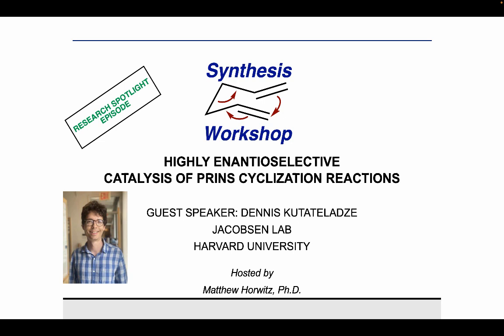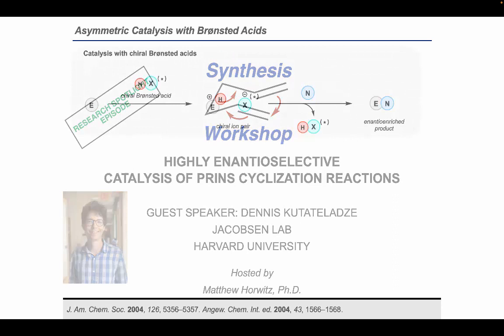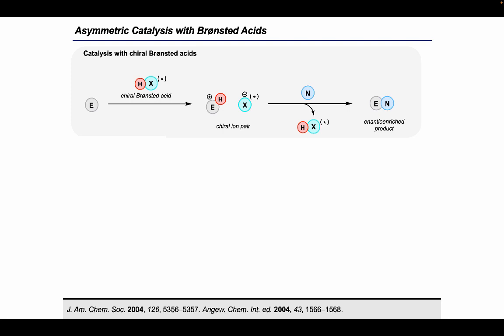Today I'll tell you a single story that has been published in two parts, the first of which is more of a synthetic paper, and the second is more of a mechanistic investigation of the reaction that we developed. Specifically, I'll talk about the Prins cyclization reaction, as catalyzed by combinations of hydrogen chloride and chiral hydrogen bond donors. I'll be talking about asymmetric catalysis using Brønsted acids.